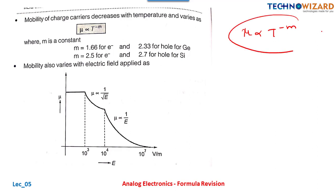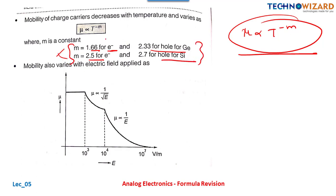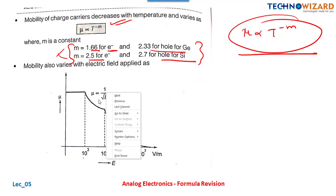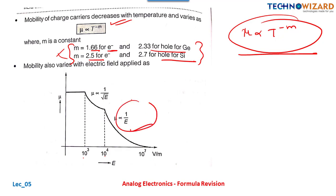Mobility is directly proportional to T^(−m), where m is a constant: for electrons in germanium m ≈ 1.6, and for holes m ≈ 2.33. You don't need to remember the exact values, just the relation. Also, at electric fields between 0 and 10⁴ V/cm, μ is directly proportional to 1/√E; between 10⁴ and higher fields, μ is inversely proportional to E. Remember this relation and this graph — it is very important.